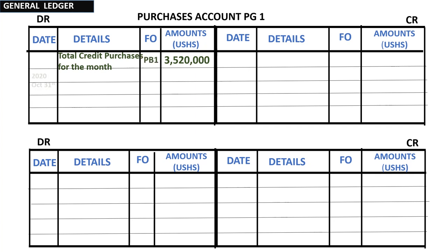That is how we make the postings relating to purchases on credit. This should not be confused with cash purchases. If it were cash purchases, it would mean cash was exchanged, and the book of prime entry would be the cash book, as discussed in our previous session. The purchases day book specifically deals with purchases on credit.